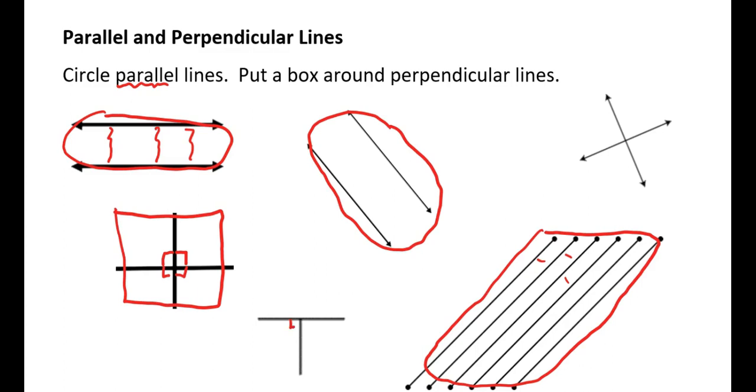In this shape, where the two lines meet, we create two 90 degree angles. So those would be perpendicular lines. And the last set here, we have two lines that cross each other. Where they meet, 90 degree angles are formed. So we'll put a box around that one as well. So there's just a little review between parallel and perpendicular lines.